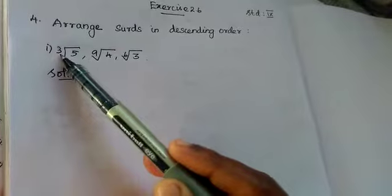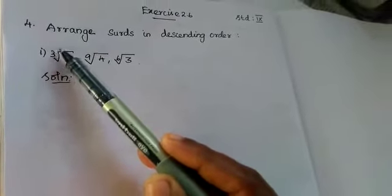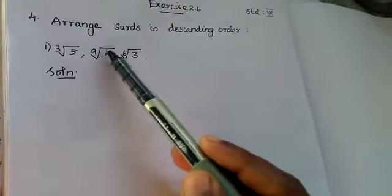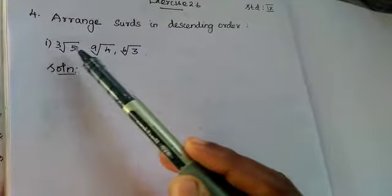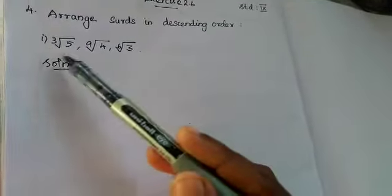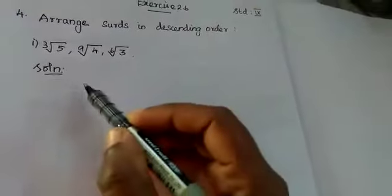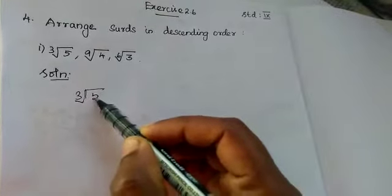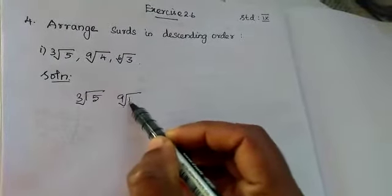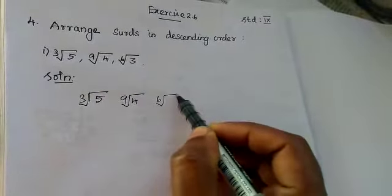Now here see this order of the surds are different or varied. So we want to make this order of the surds as same. How will you make the order of the surds as same? By taking LCM. Now tell me what: cube root of 5, 9 root of 4, 6 root of 3.